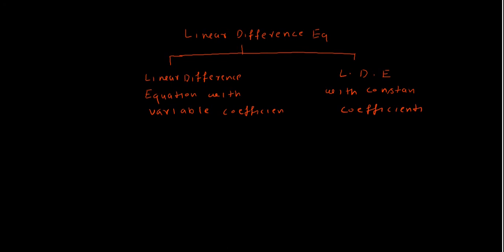In the general form of a linear difference equation: a0·y(x+n) + a1·y(x+n-1) + ... + an·y(x) = phi(x), if the values of a0, a1, a2, up to an are all constant, then this is under the category of a linear difference equation with constant coefficient. Otherwise, if any one of them is a function of x, then it is a linear difference equation with variable coefficient.